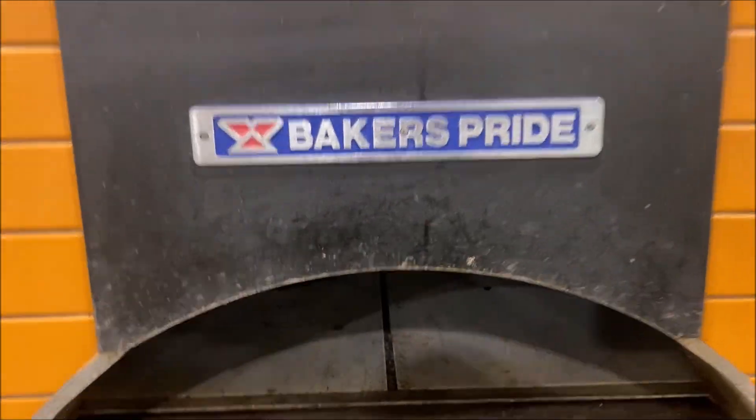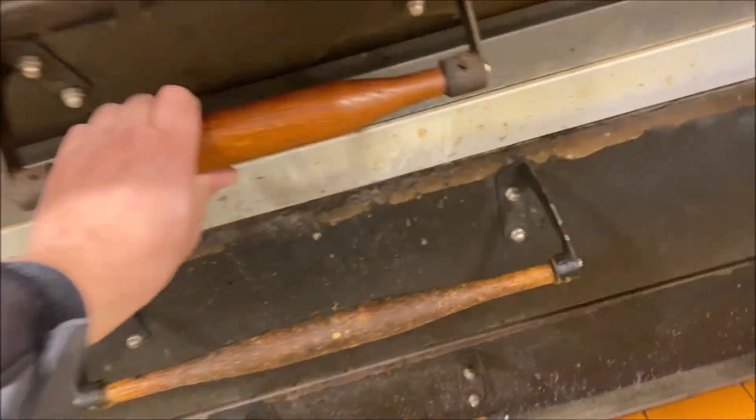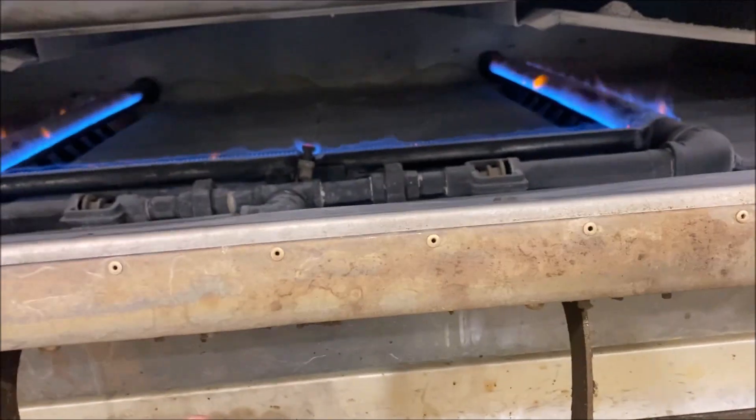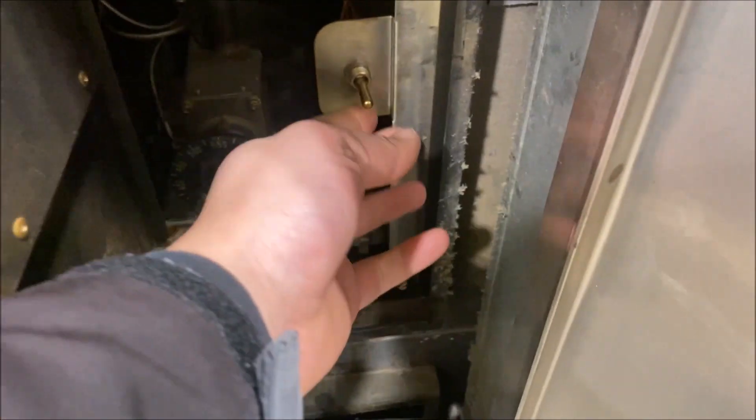Hello everyone, today I'm working on a pizza oven that is not cooking the pizzas properly. The bottom burner is working, so our issue is probably with the top burner. Let's fire it up. We do not have a thermostat, just a toggle switch.